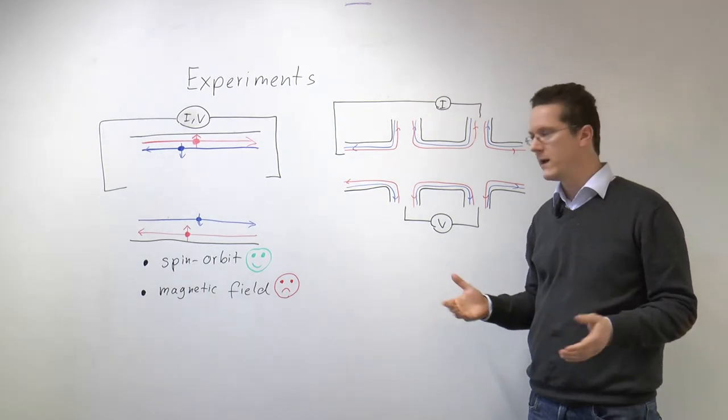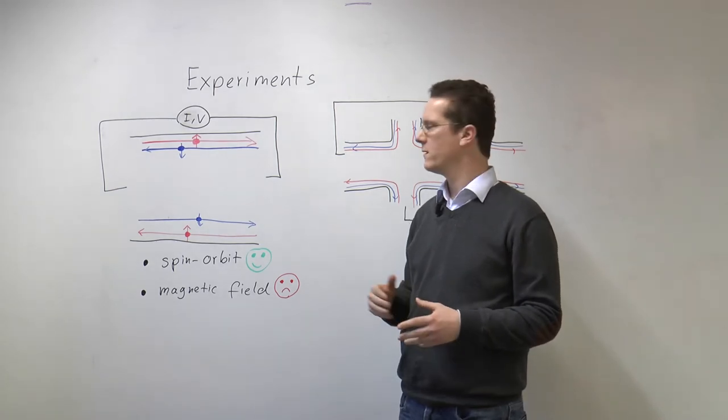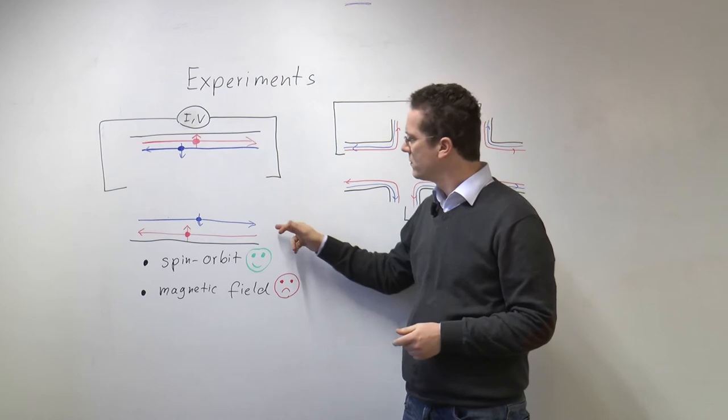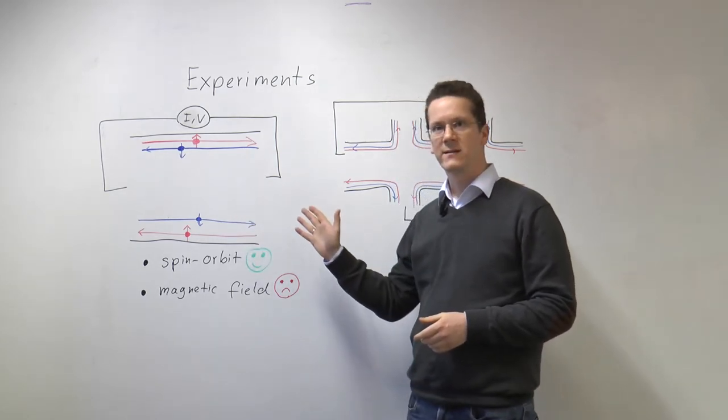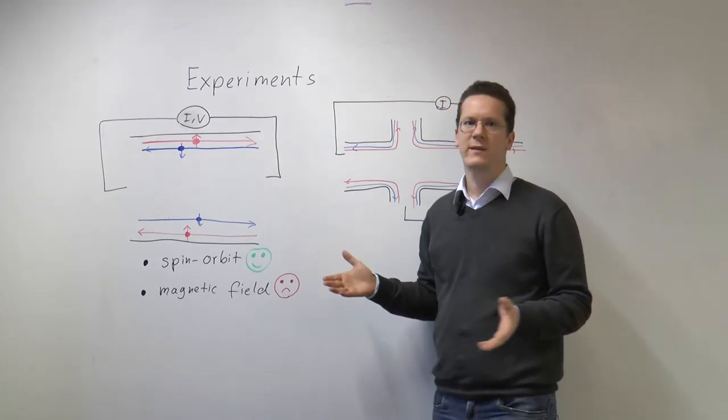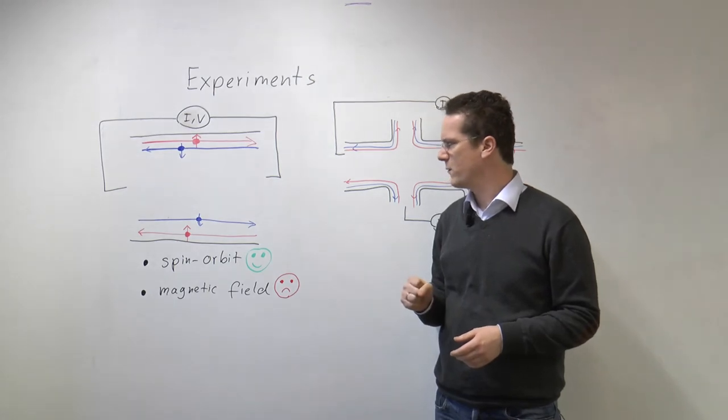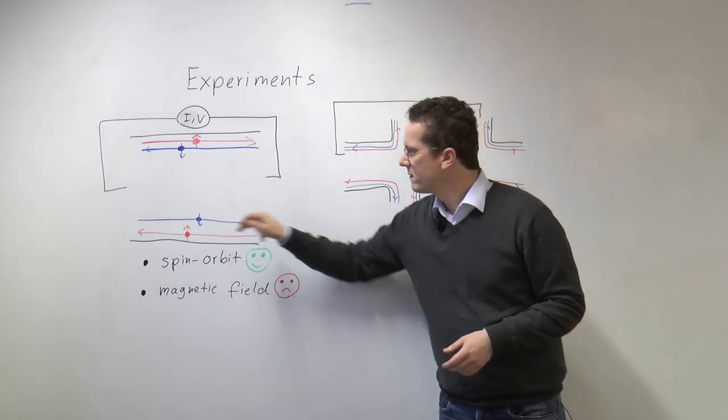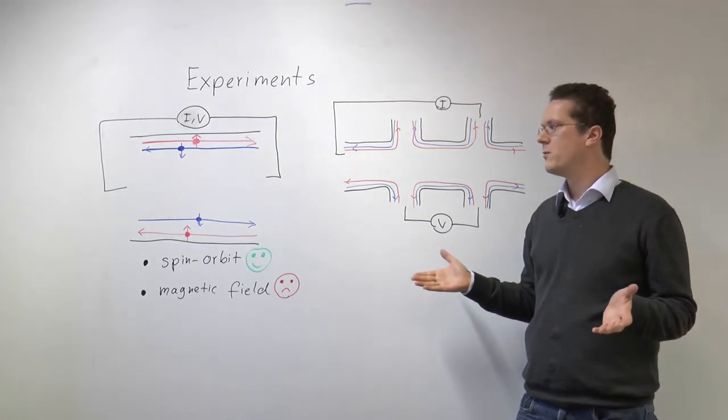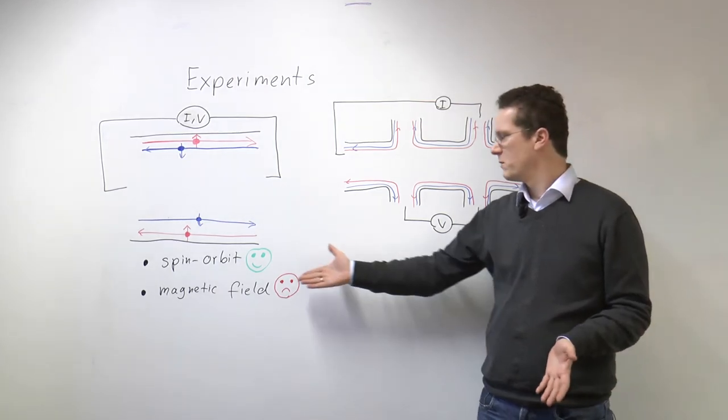Now a second way to probe the edge channels in a two-dimensional topological insulator is to try to destroy this topological insulator phase, to try to make these edge channels reflect. Now spin-orbit for example, we already know that doesn't do the trick because spin-orbit does not break time-reversal symmetry and since these are protected by time-reversal symmetry there is no backscattering. So what we really need to do is we need to break time-reversal symmetry. The easiest way to do that is with a magnetic field.